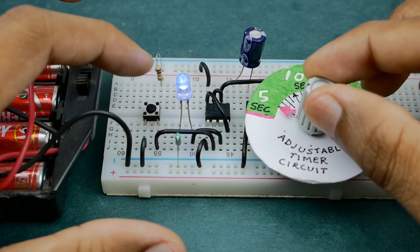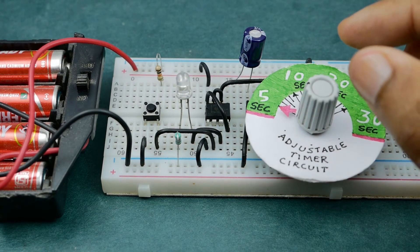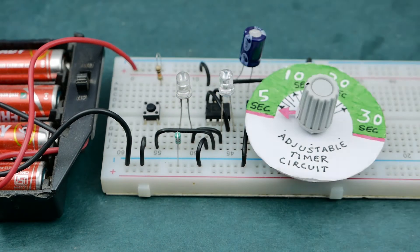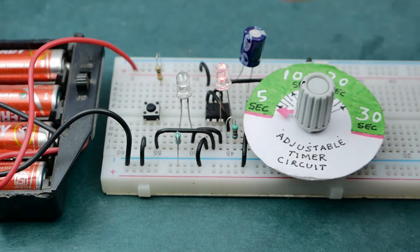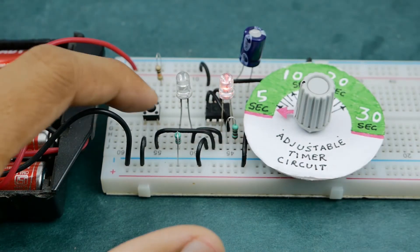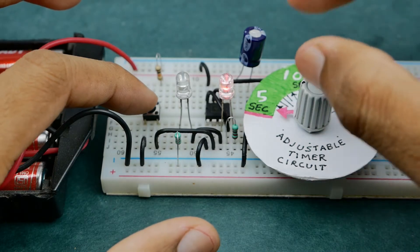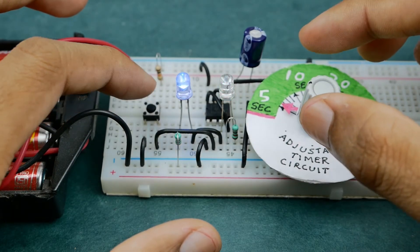Right now the output automatically turns off after the specified delay but we can also make the output turn on after the delay by connecting it between the output and positive rail. Here, I've used the red LED to indicate that the timer has completed the required duration.